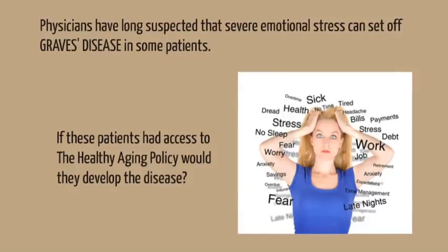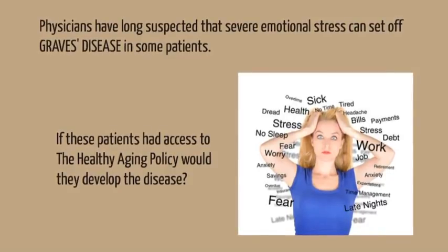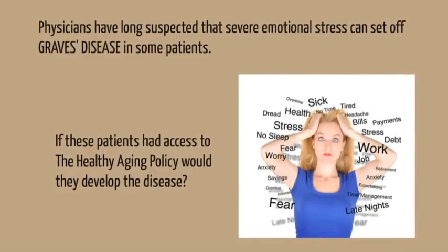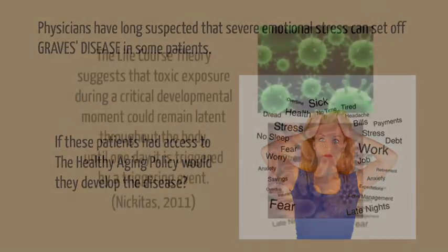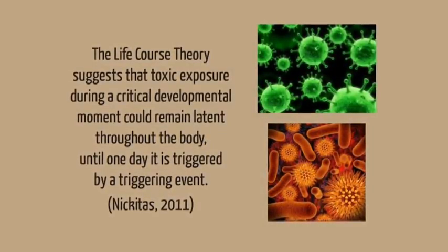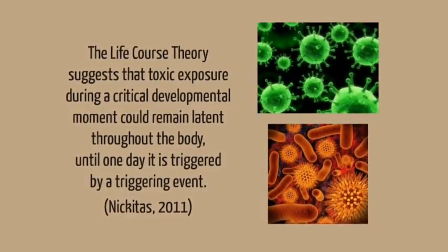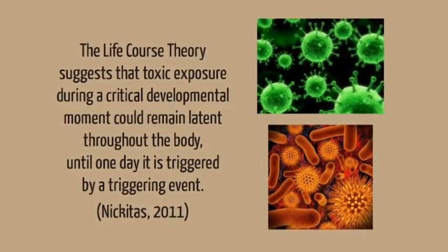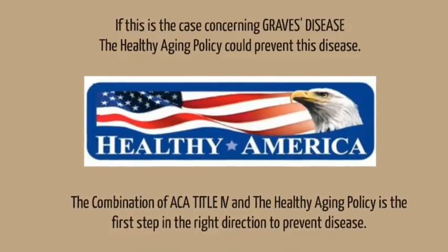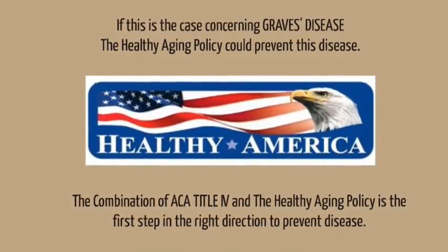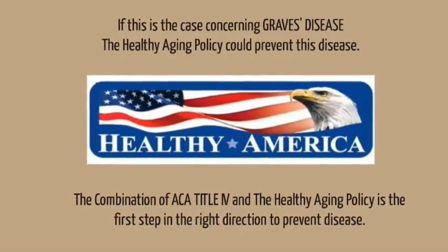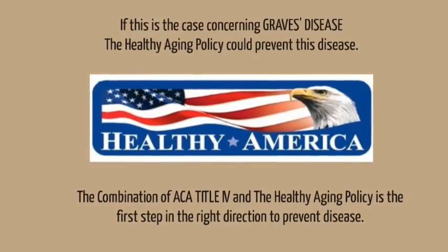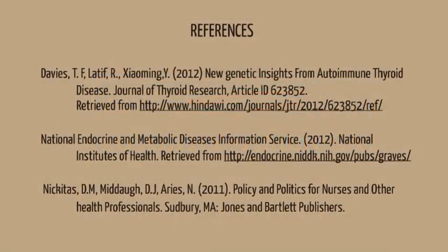Physicians have long suspected that severe emotional stress can set off Graves disease in some patients. If these patients had access to the Healthy Aging Policy, would they develop the disease? The life course theory suggests that toxic exposure during a critical developmental moment could remain latent throughout the body until it is triggered by a triggering event. If this is the case concerning Graves disease, the Healthy Aging Policy could prevent this disease. The combination of the ACA Title IV and the Healthy Aging Policy is the first step in the right direction to prevent disease. Thank you.